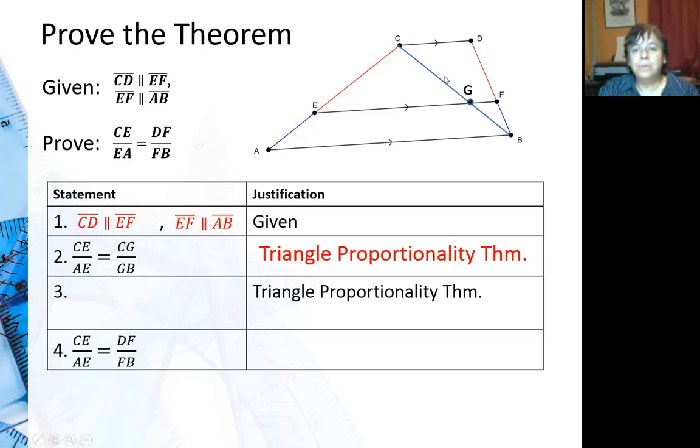I can also say, you see this upside down triangle up here, that CG is to GB as DF is to FB. That's still the triangle proportionality theorem, just using this upside down triangle.